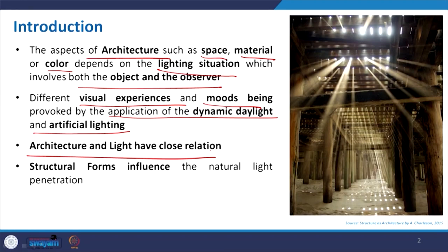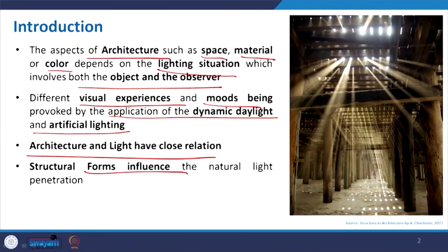In absence of light we cannot see anything. In presence of light, depending on intensity, direction, and colour tint, we visualize objects differently. If this relation between light and perception is true, it is equally true for structural form. Different structural forms may facilitate welcoming light inside a structure. Here you can see a wooden structure — a very simple structure with columns, beams, and at the rooftop some kind of perforation. Through this perforation, daylight comes inside creating a shade and light ambience which gives a different experience than if covered with opaque material.